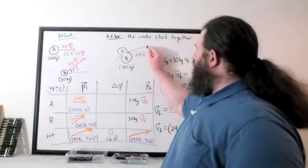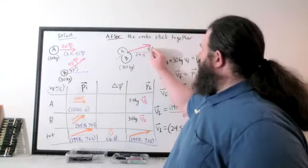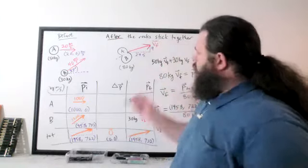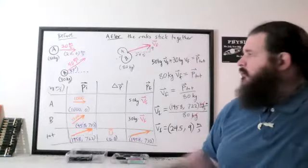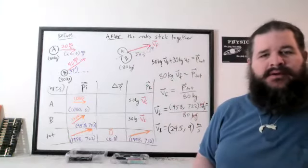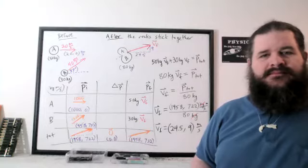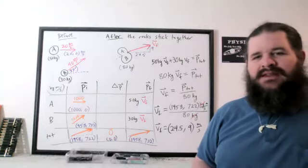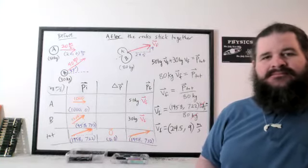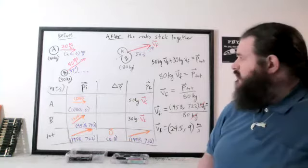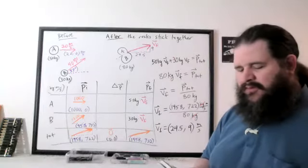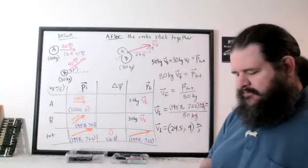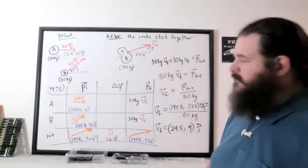The final velocity vector looks something like this. We can also find how fast the object is actually traveling using the Pythagorean theorem: √(24.5² + 9²). The Pythagorean theorem always works to convert xy components to the magnitude, and I'm getting about 26.1 meters per second.